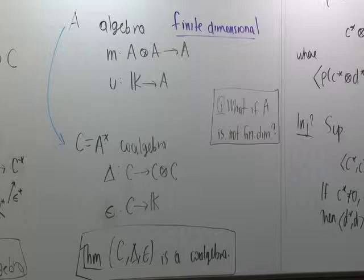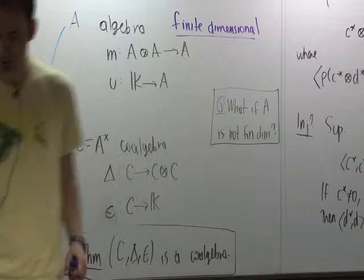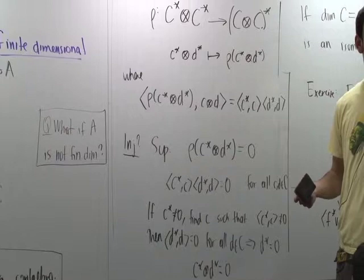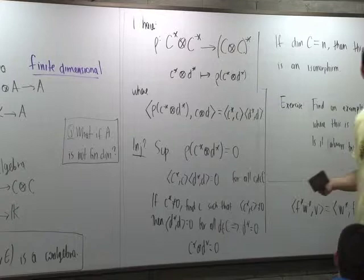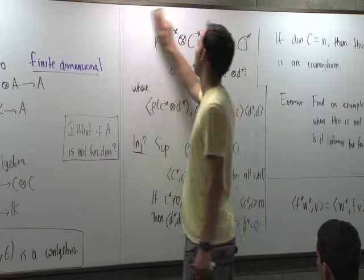Let's do an example: let's dualize a concrete co-algebra and see what we get. What's your favorite co-algebra? The incidence co-algebra was suggested, so let's dualize the poset co-algebra. Last time we defined the incidence co-algebra of a poset P; let's see what we get when we dualize. We're going from co-algebra to algebra, so we don't need any finiteness conditions — this works in general.